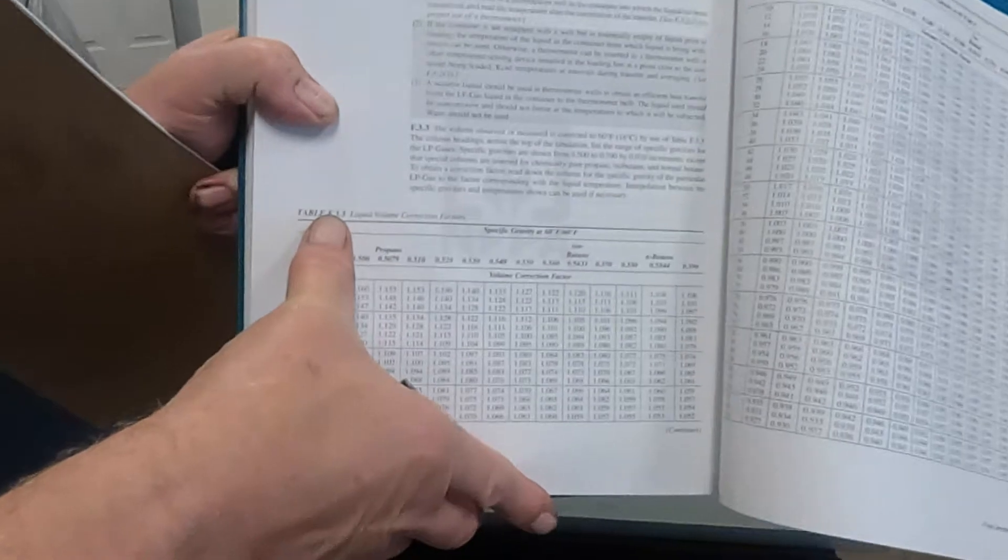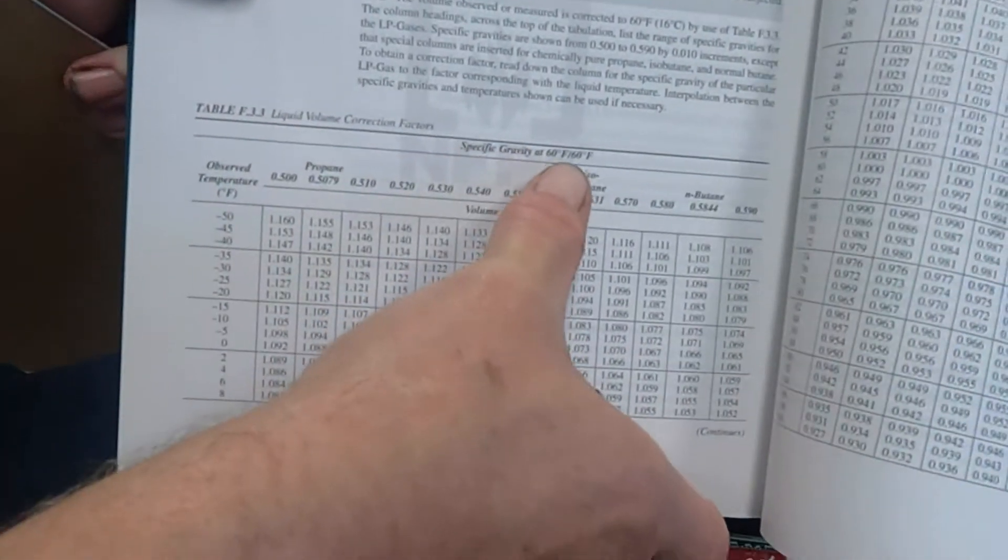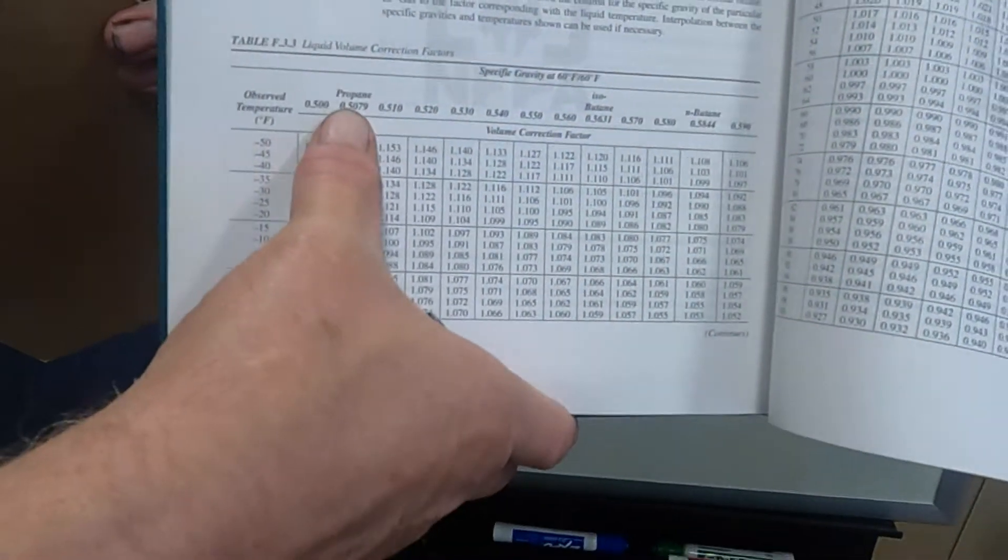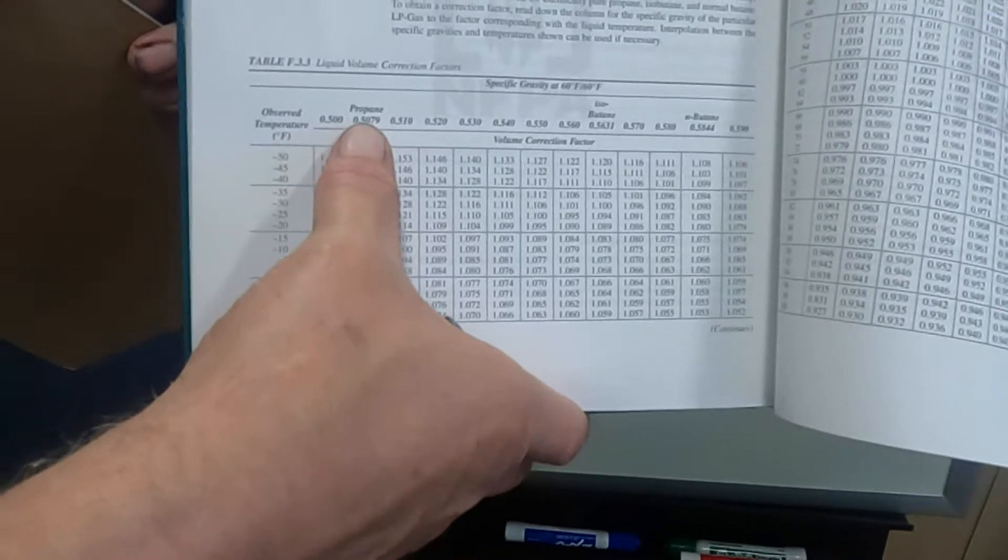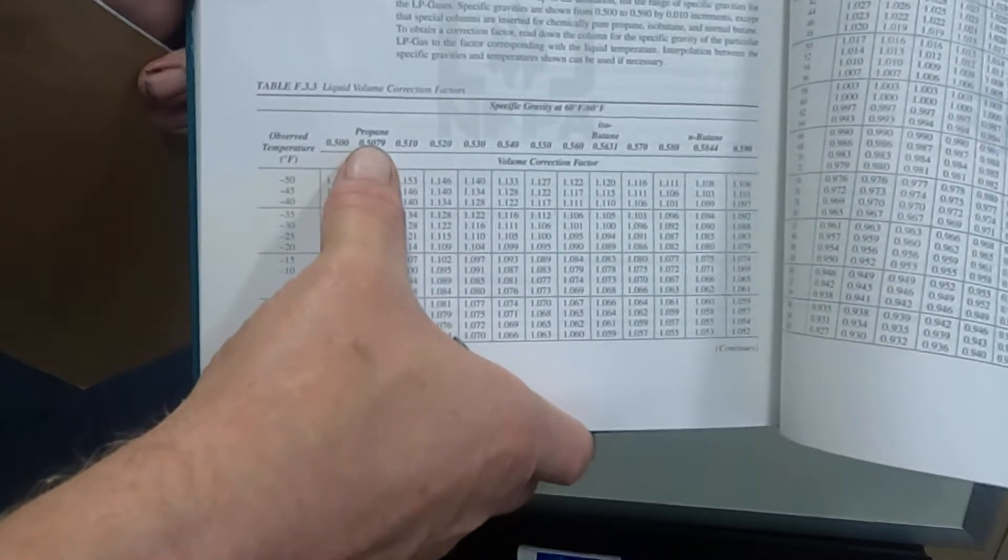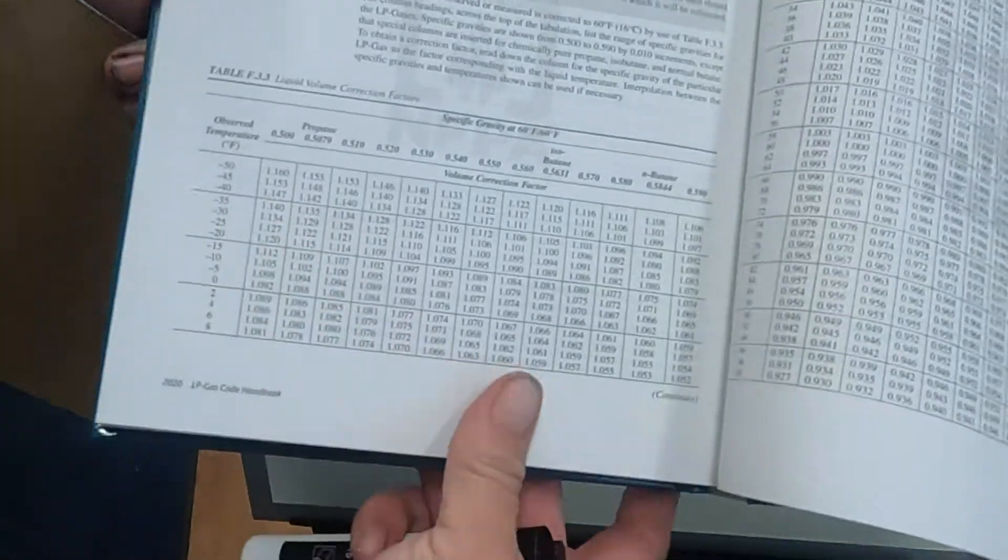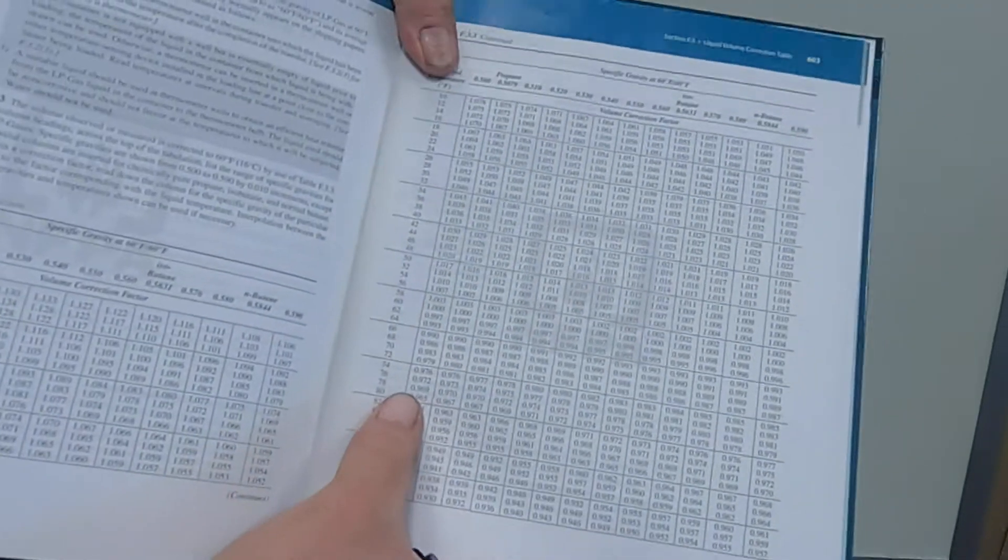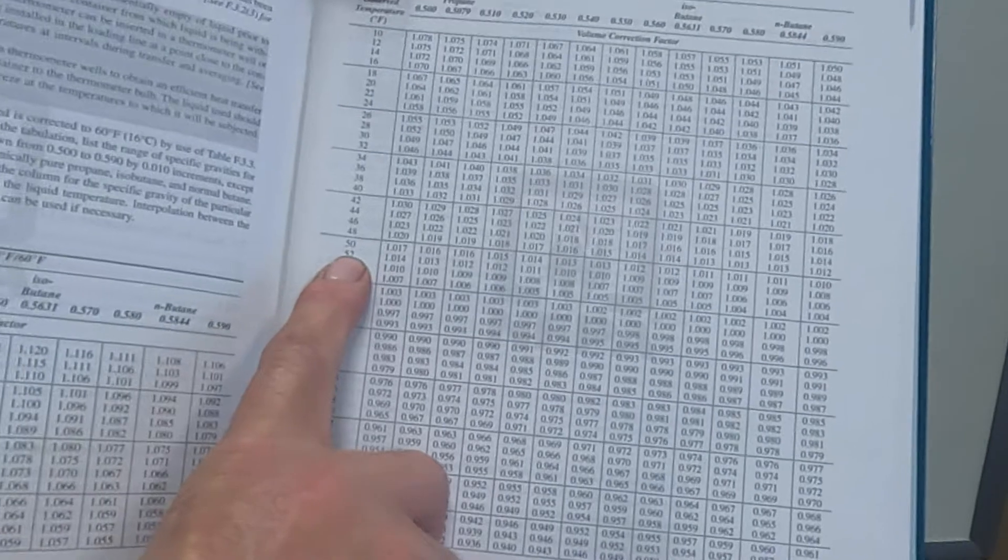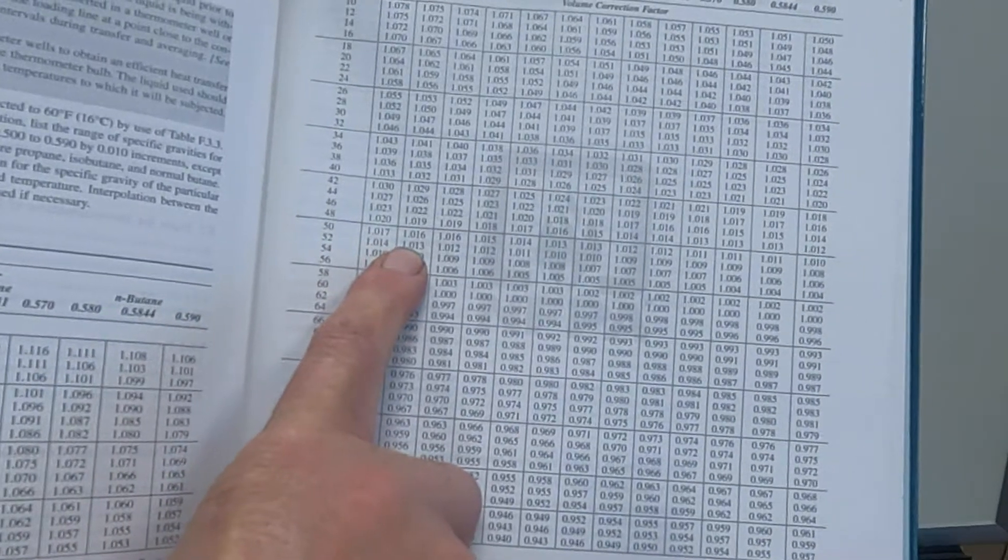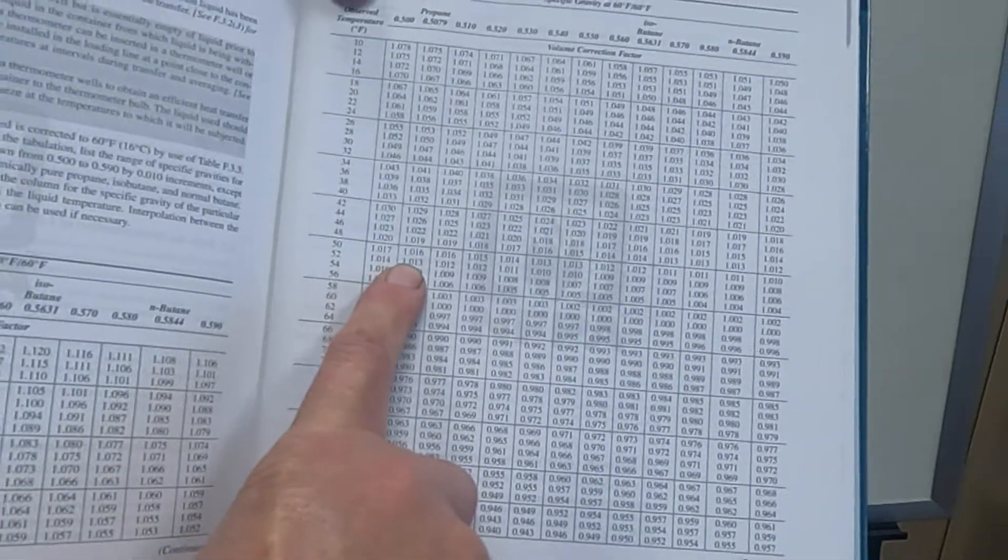Table F.3.3, specific gravity, 60 degrees Fahrenheit, is declaring propane of a specific gravity of 0.5079. So we'll follow this chart going down here. We come over here, find 52 degrees, come over here, we get a correction factor of 1.013. So we'll use that.